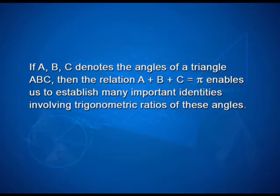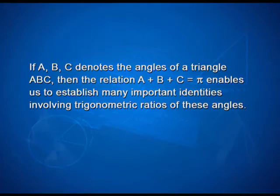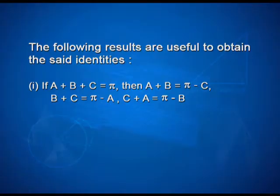If A, B and C denote the angles of a triangle ABC, then the relation A plus B plus C equals pi enables us to establish many important identities involving trigonometric ratios of these angles. The following results are useful: if A plus B plus C equals pi, then A plus B equals pi minus C, B plus C equals pi minus A, and C plus A equals pi minus B.